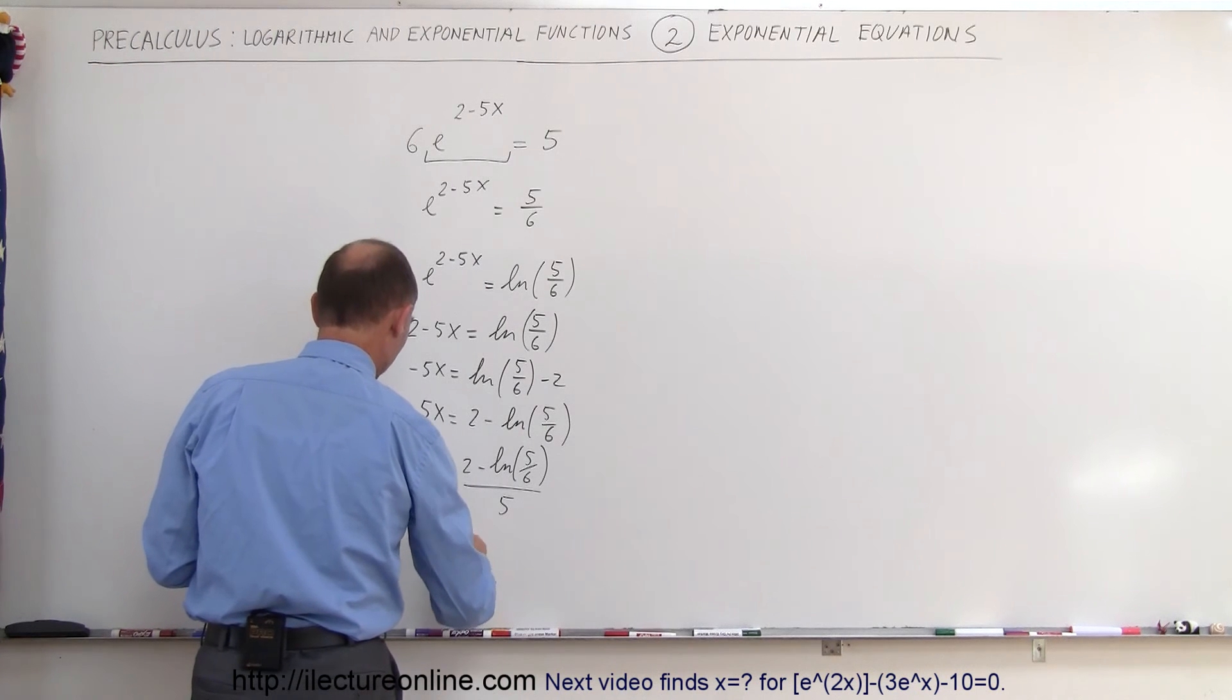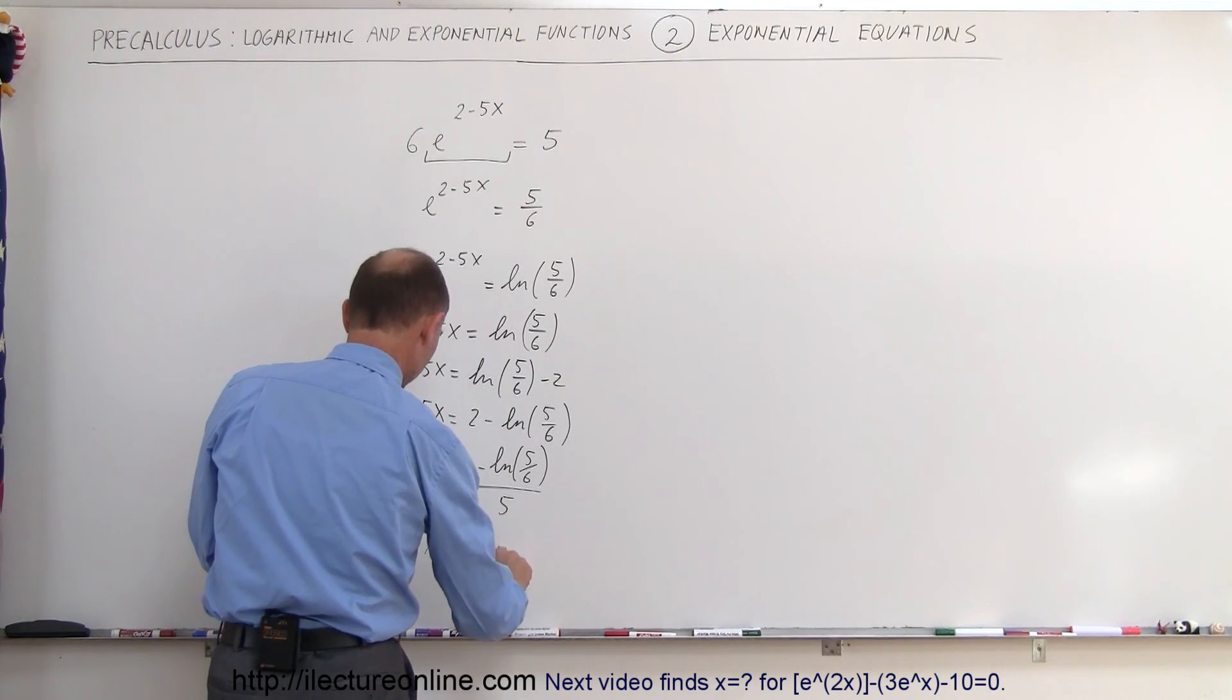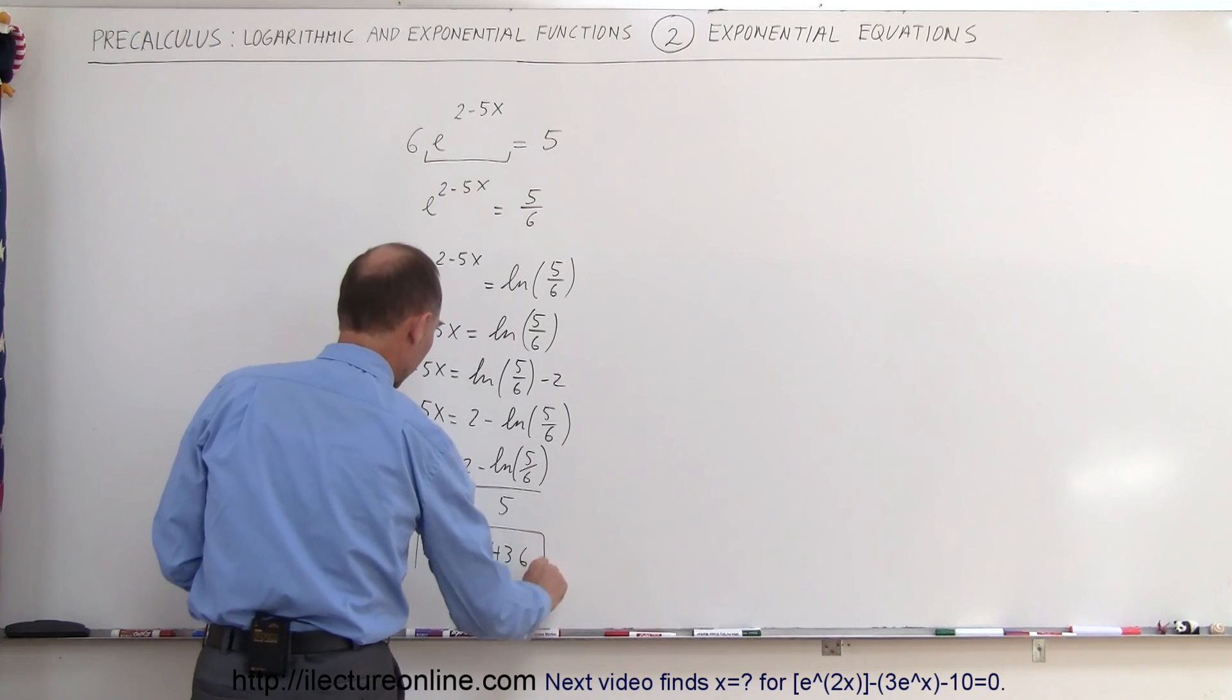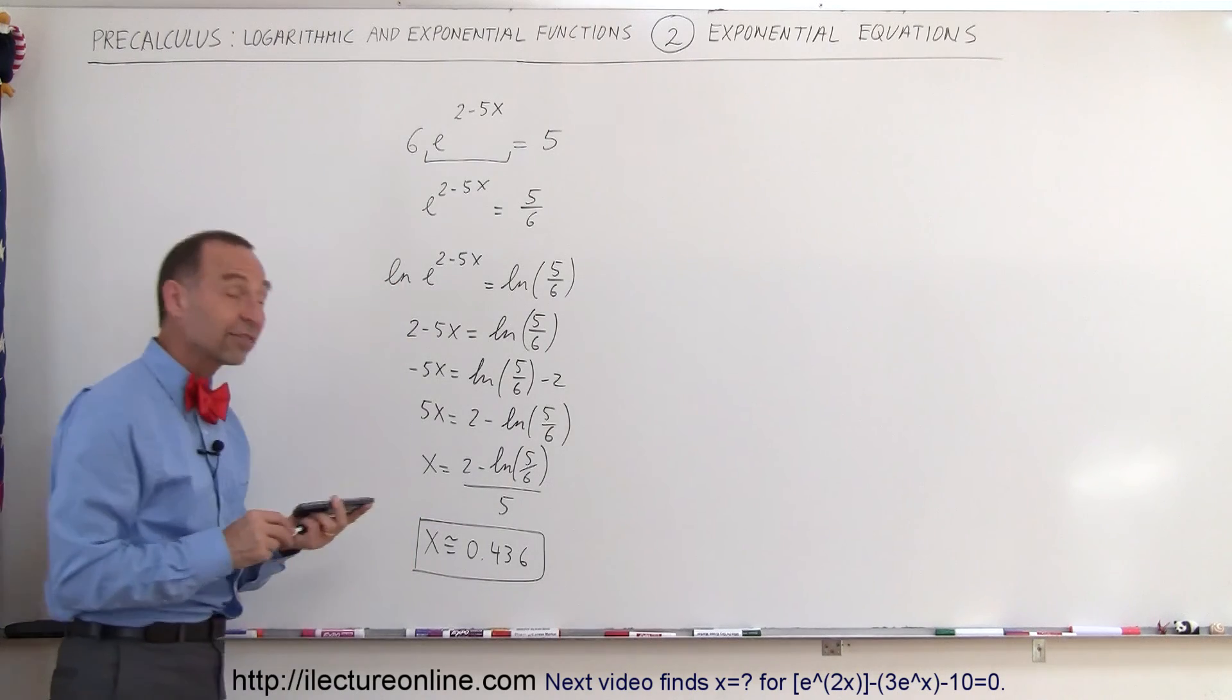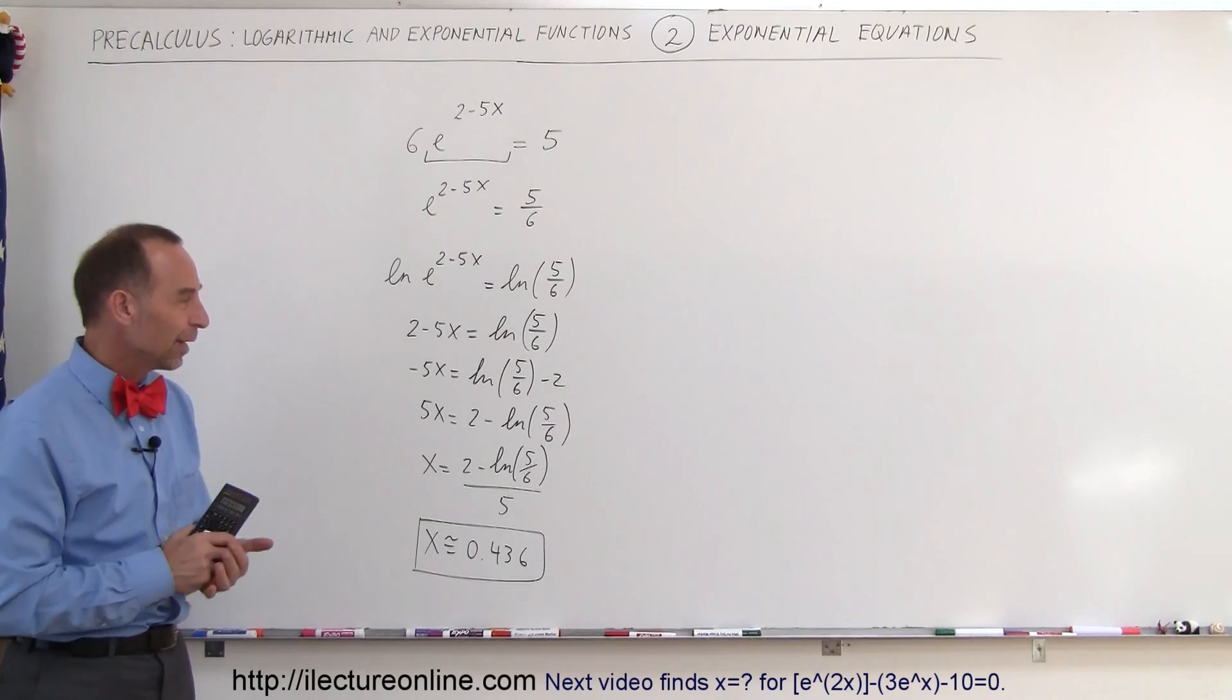The answer is x is approximately equal to 0.436. It's approximate because it's a never-ending decimal; we don't have the exact value, but to three decimal places that's the value for x, and that's how we do that.